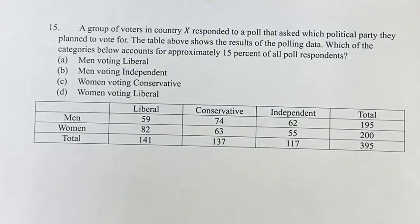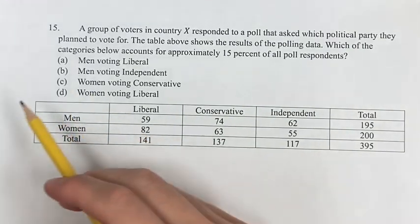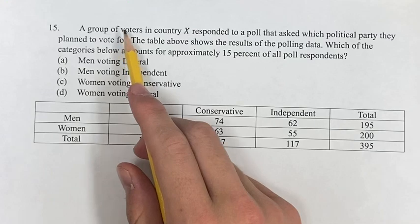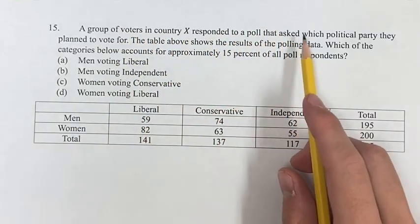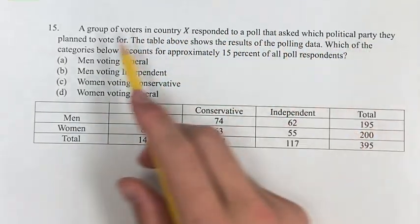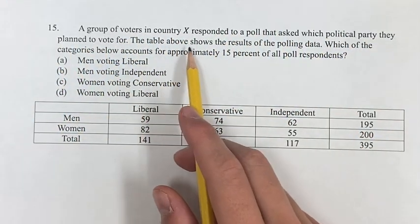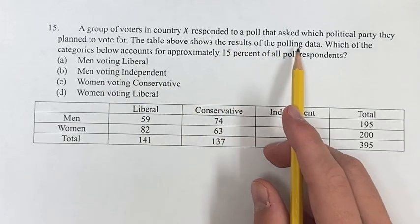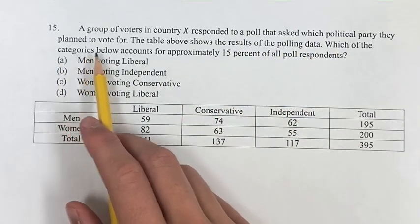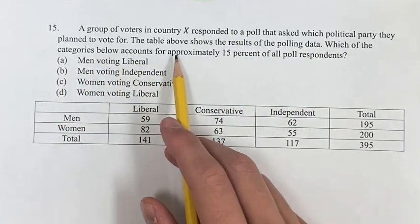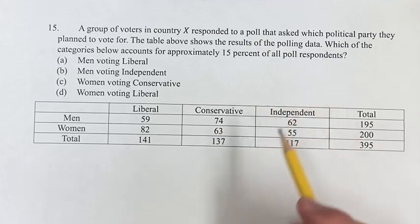Hello, and welcome back to another video. This problem: we're told a group of voters in country X responded to a poll that asked which political party they planned to vote for. The table above shows the results of the polling data, and the question asks which of the following categories accounts for approximately 15% of all poll respondents.